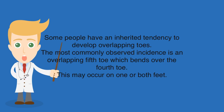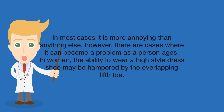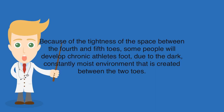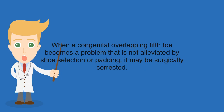Some people have an inherited tendency to develop overlapping toes. The most commonly observed incidence is an overlapping fifth toe which bends over the fourth toe. This may occur on one or both feet. In most cases it is more annoying than anything else; however, there are cases where it can become a problem as a person ages. In women, the ability to wear a high-style dress shoe may be hampered by the overlapping fifth toe. Because of the tightness of the space between the fourth and fifth toes, some people will develop chronic athlete's foot due to the dark, constantly moist environment created between the two toes. When a congenital overlapping fifth toe becomes a problem that is not alleviated by shoe selection or padding, it may be surgically corrected.